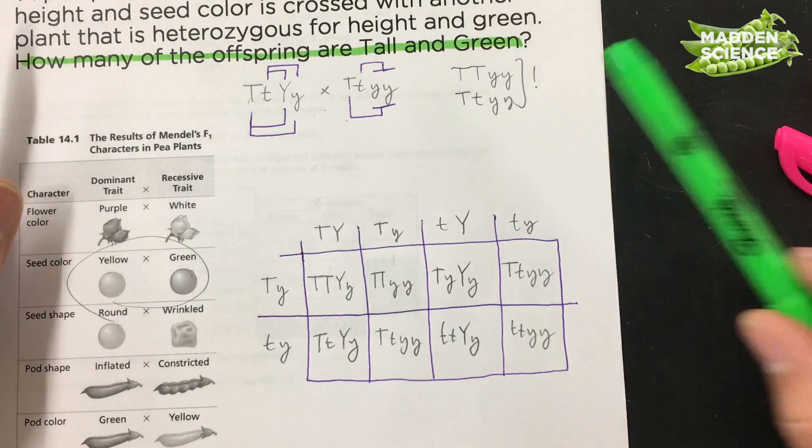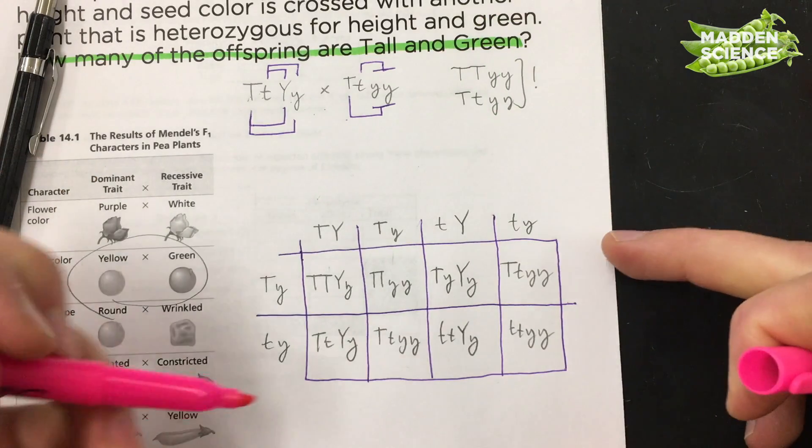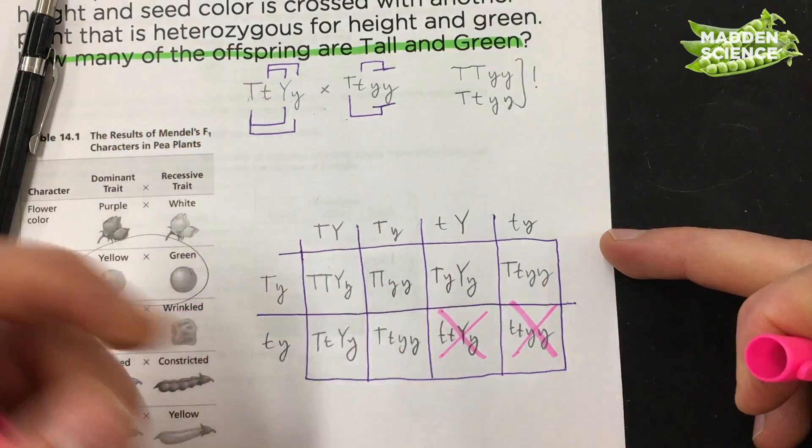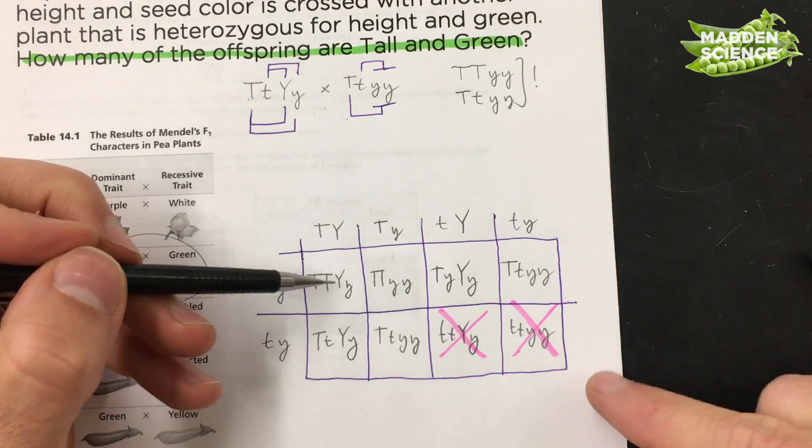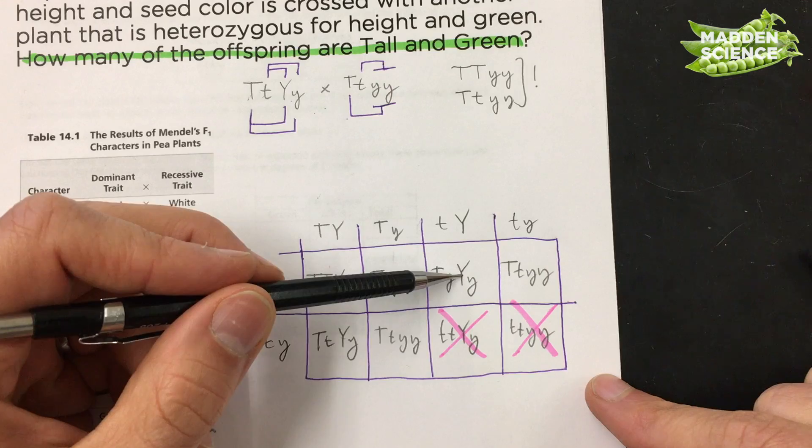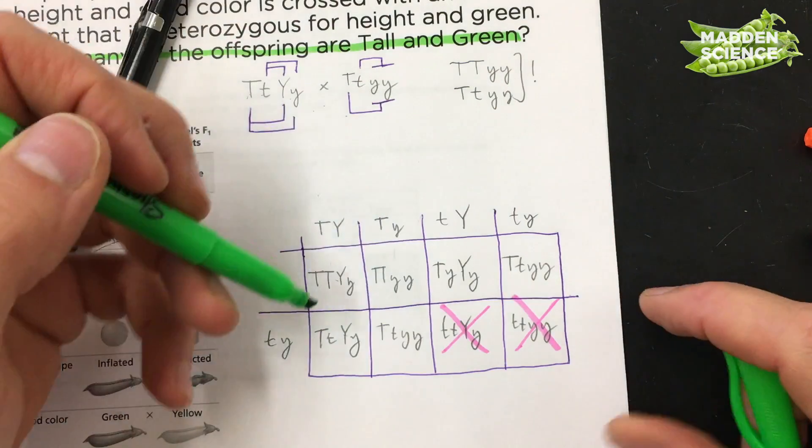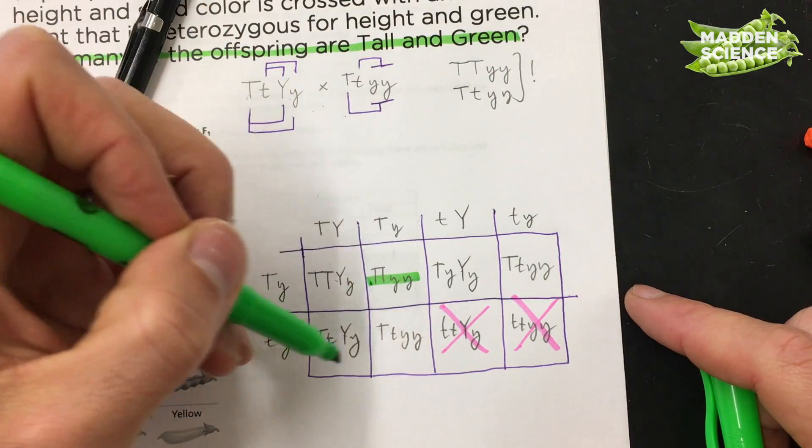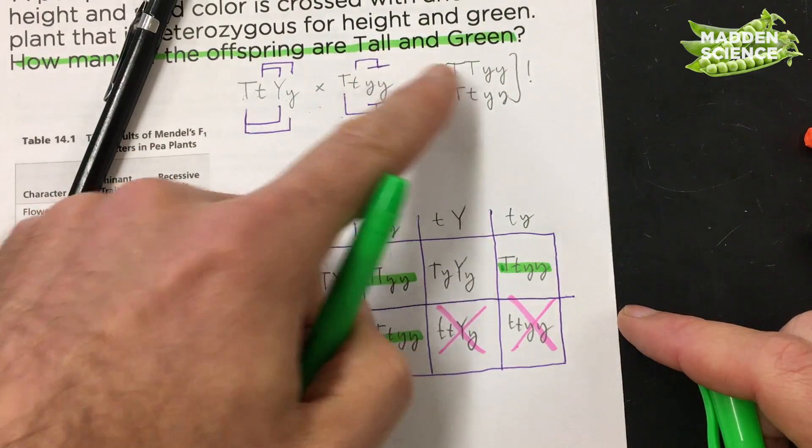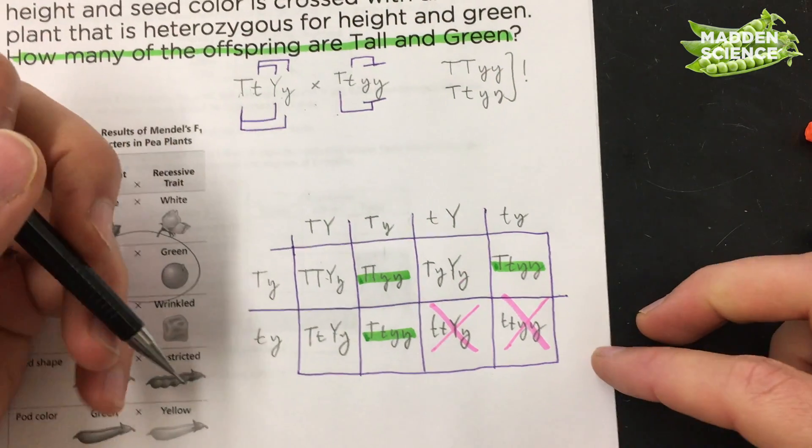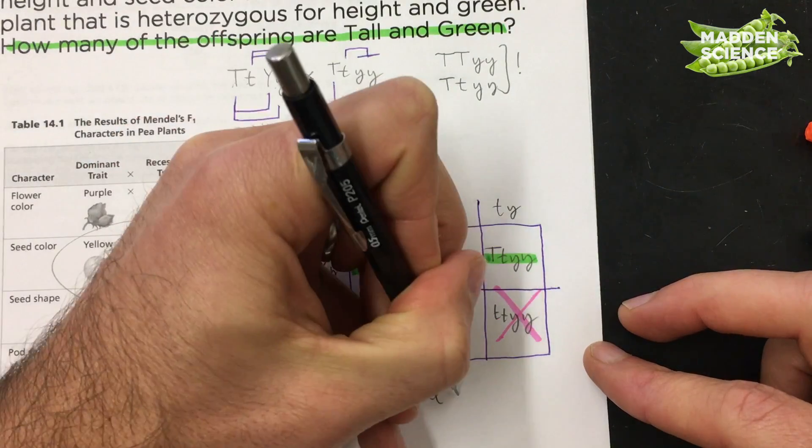Those are our possibilities. Now we're searching for just the ones that are tall and green. So even if we wanted, we could get rid of any ones that aren't tall. So this guy is not tall. This guy's not tall. Those are our two non-tall ones. And then we can get rid of anyone that's not green. This guy's not green, not green, not green. Okay. So out of our eight possibilities, that's going to leave us with one, two, three that are both tall and green. We can write that then as our ratio. Three eighths of the offspring will be tall and green.